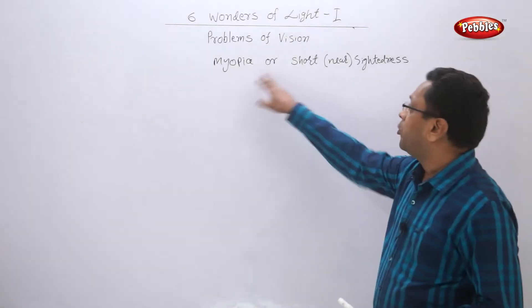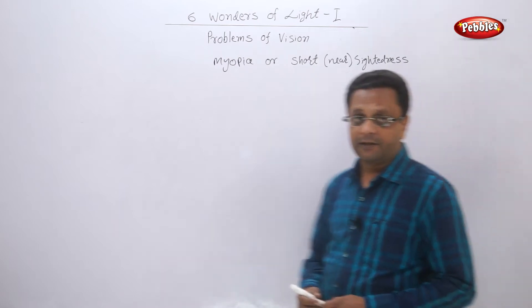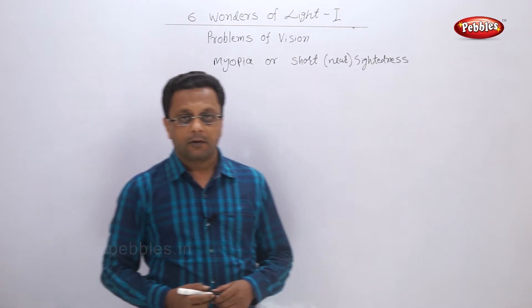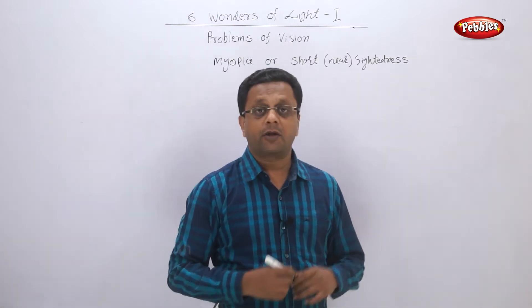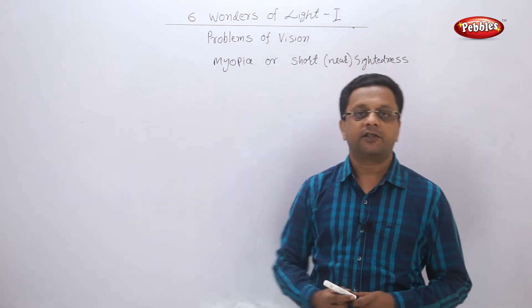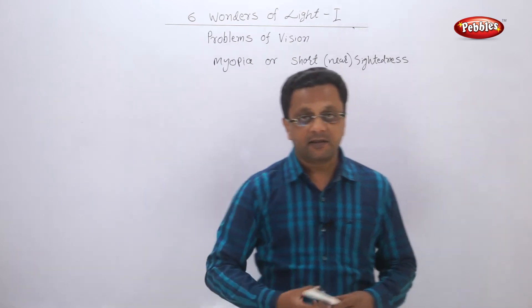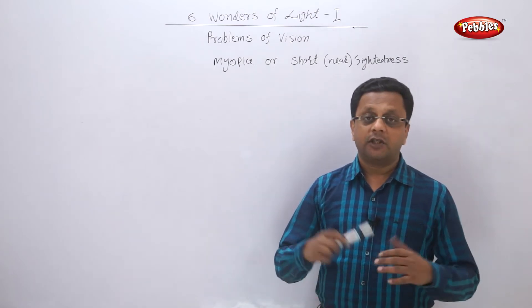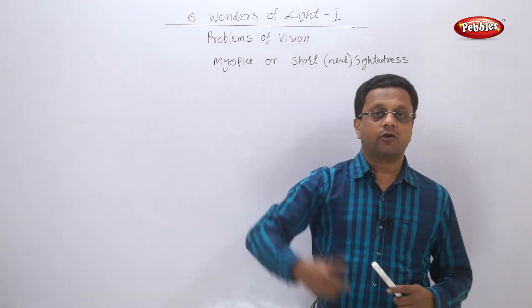Let us learn myopia or short-sightedness or near-sightedness. What do you mean by that? Short-sighted or near-sighted means a person who can see nearby objects but is not able to see clearly the long-distance objects.